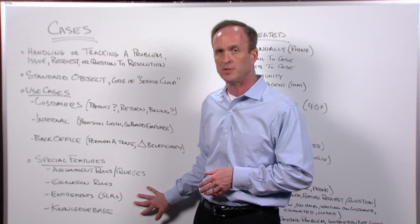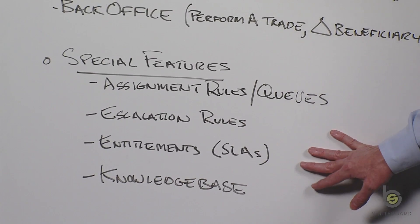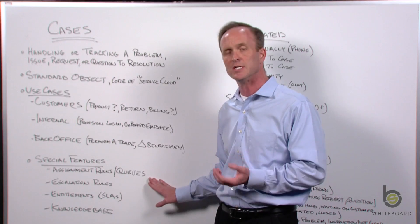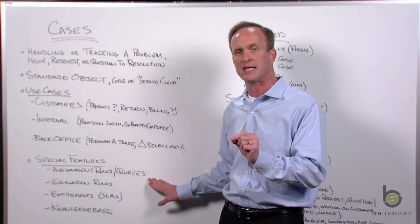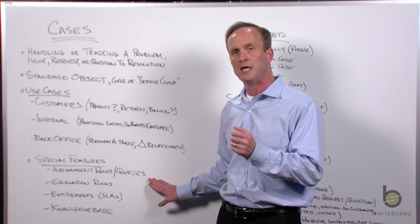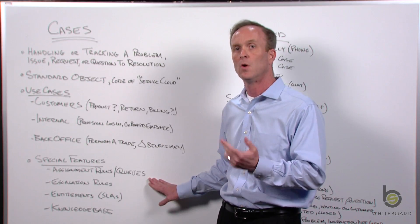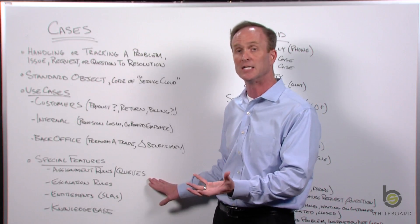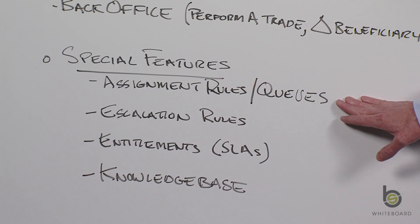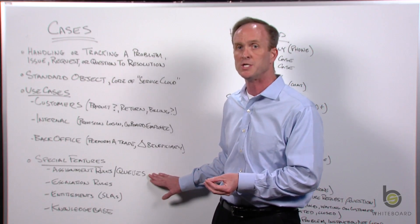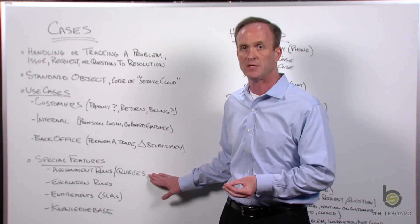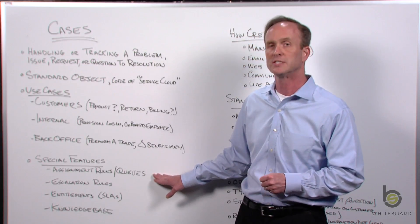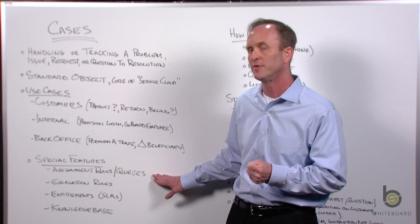Let's talk about some special features available with cases. Assignment rules: when a case gets created, an assignment rule can evaluate the information on that case and decide who should work it — either a specific user or a queue, which is really an unassigned bucket. So you could have a new case queue, a tier one queue, a tier two queue. If a tier one agent finds a question too complex, they assign it to a tier two queue and someone working that queue can grab it. It's really about ownership of the record.